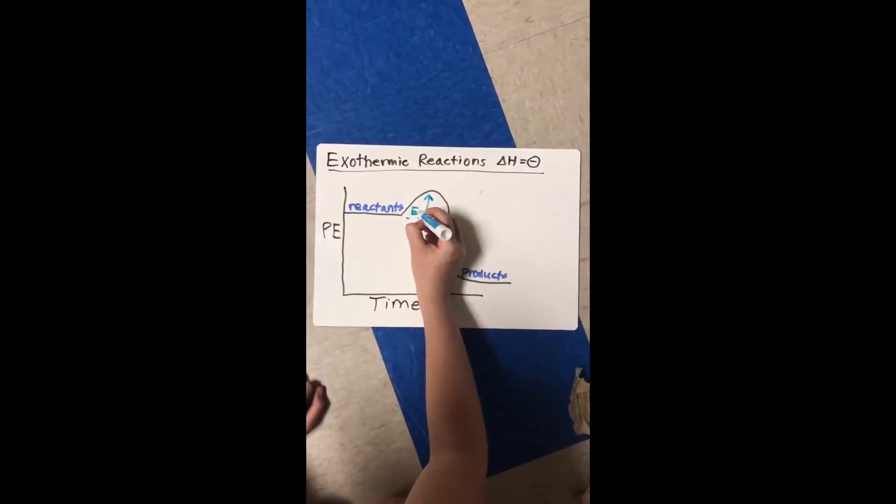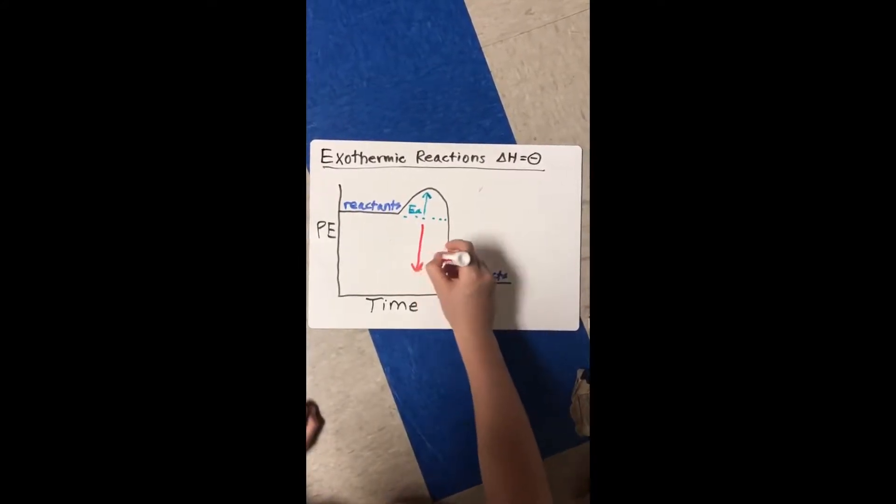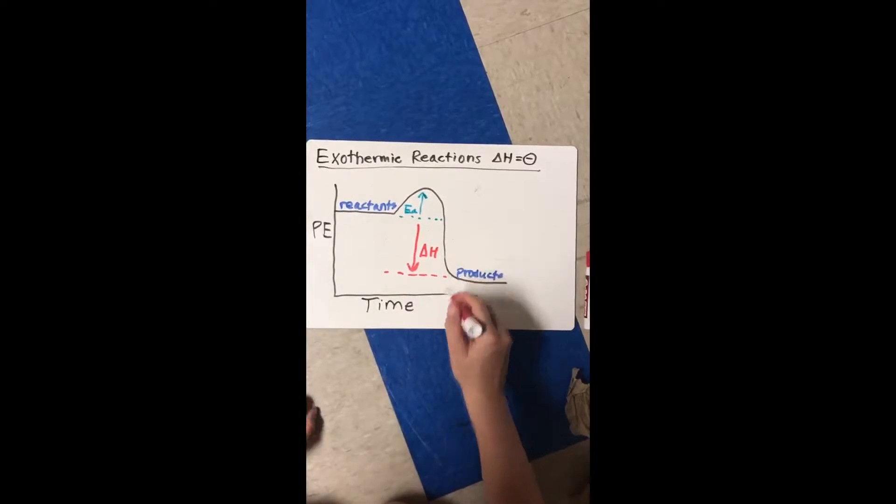Activation energy is the energy required for a reaction to begin. In this graph, delta H represents the difference in energy between the reactants and products. Delta H is negative because the amount of energy decreases.